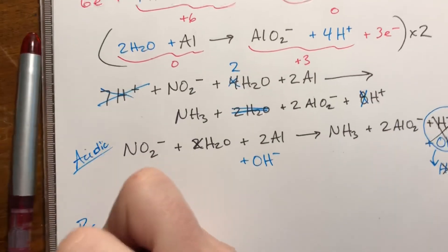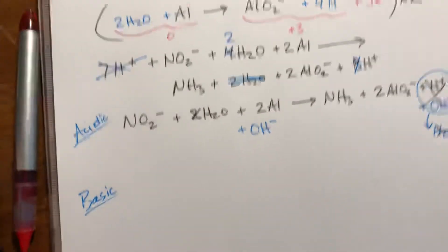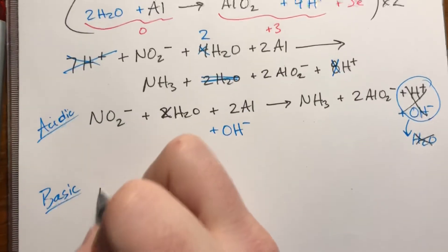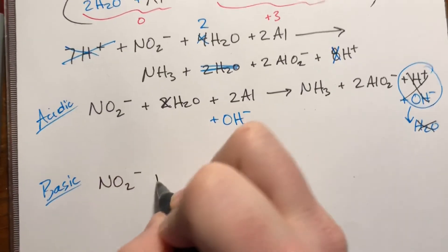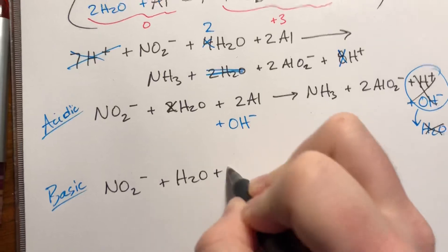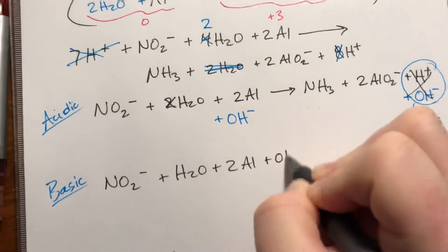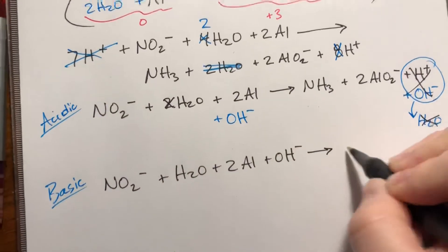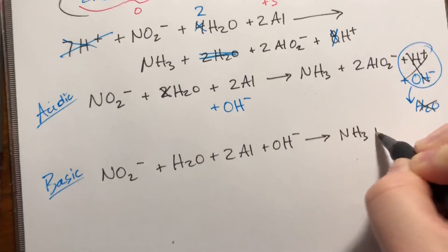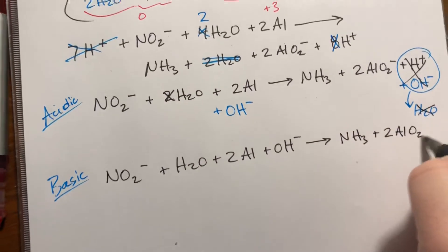I'll keep my colors consistent. Under basic conditions, what you're going to do is you're going to have NO2 minus plus one water plus two aluminum plus an OH minus forms NH3 plus two AlO2 minus.